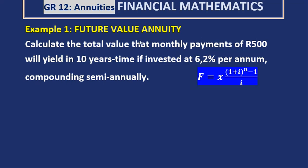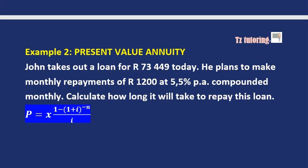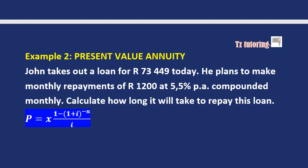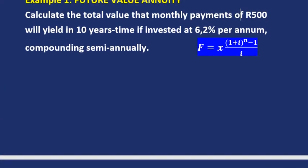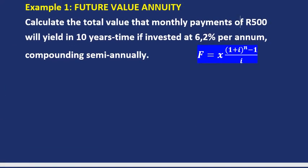If it's a future value annuity, then there's an investment. But a present value annuity — which we're going to look at in example two — is when there's a loan, when you're taking out a loan. Let's look at example one, the future value annuity example.